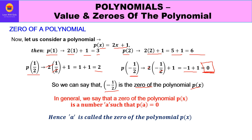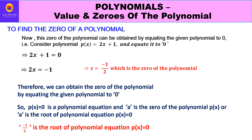In general, a zero of a polynomial p(x) is a number a such that p(a) = 0. That number — like −½ in our example — gives us 0 and is known as the zero of the polynomial. Now, how do we obtain that zero? The zero of the polynomial can be obtained simply by equating the given polynomial to 0.